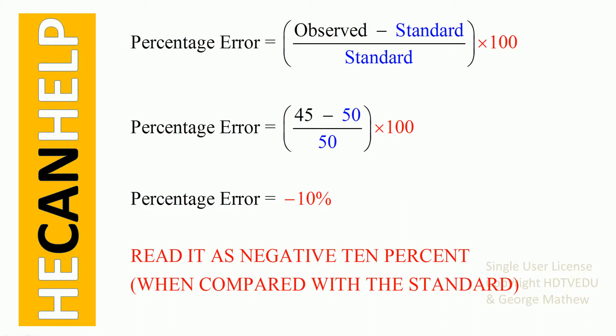If we do the lab and we observe a value that is greater than the standard — so observed is greater than standard — then our percentage error is positive. If observed is less than standard, then our percentage error is negative.